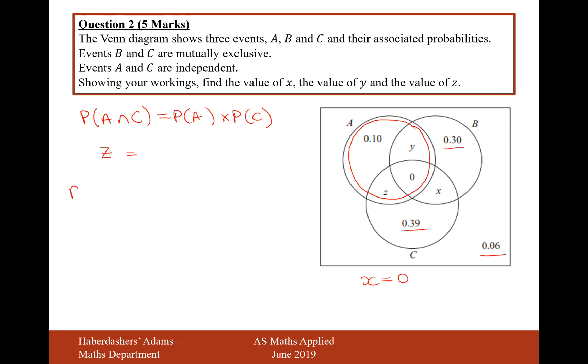work out what the probability of A is going to be equal to. So the probability of A is going to be equal to 1 minus, let's take away everything else, 0.3, 0.39, and 0.06. And that will give us, when we put that into our calculator, the probability of A is 0.25.